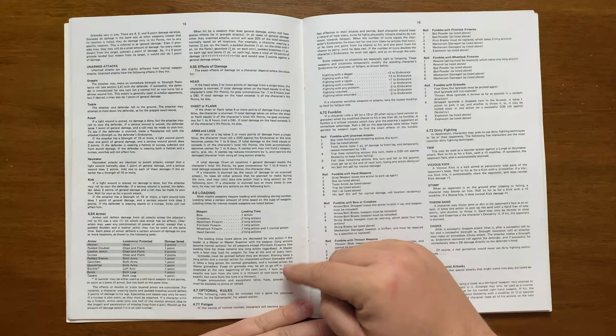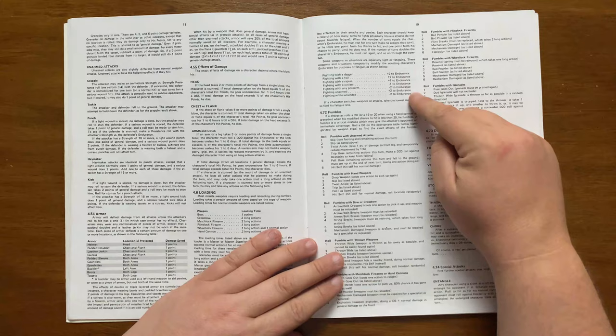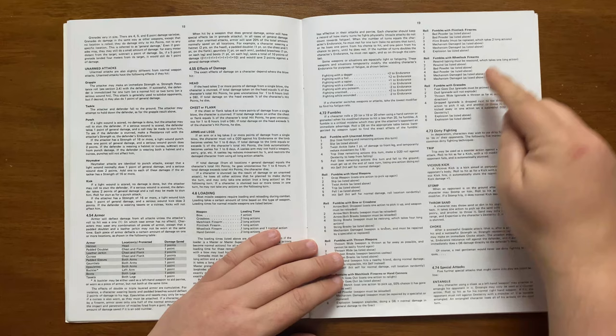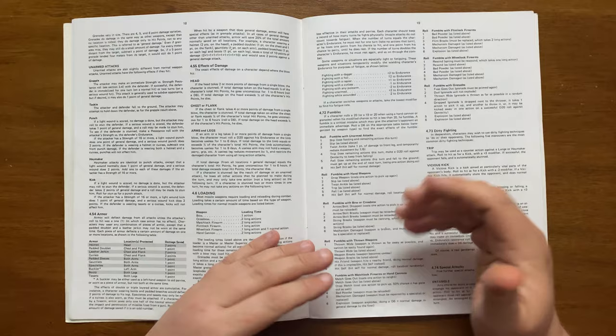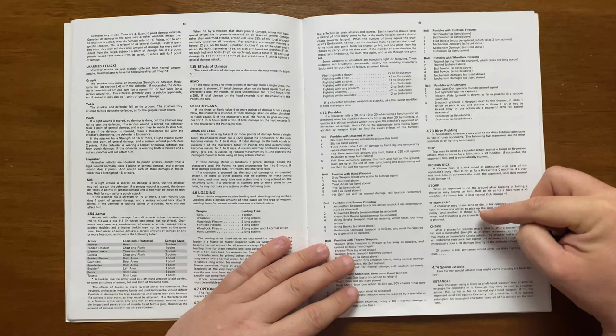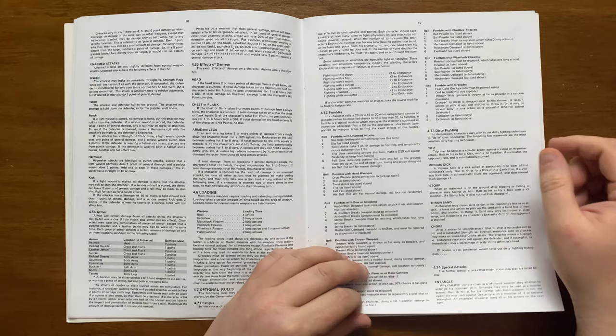It then moves on to how long it takes to load missile weapons, and then goes into the optional rules section. Here it presents us with a fatigue system, which is modified by the kind of weapon the character is fighting with and whether they are wounded or not, and it gives us some fumble tables. A fumble is a natural 20 or a 19 to 20 with firearms and grenades. After fumbles, it goes into dirty fighting, including rules for tripping, vicious kicks, stomps, throwing sand and choking, though of course a gentleman would never resort to such cowardly measures.